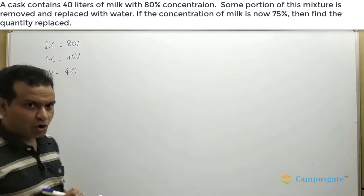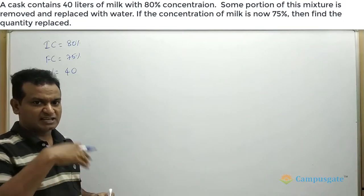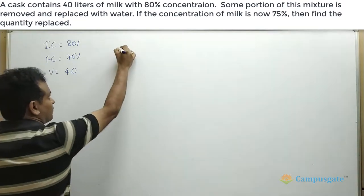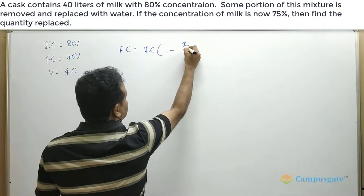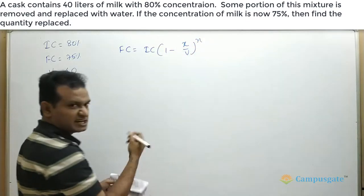So we are asked to find how many liters from this mixture has to be removed. So we can use the formula. This formula is final concentration equal to initial concentration into 1 minus x by v whole power n. It is a straightforward question.